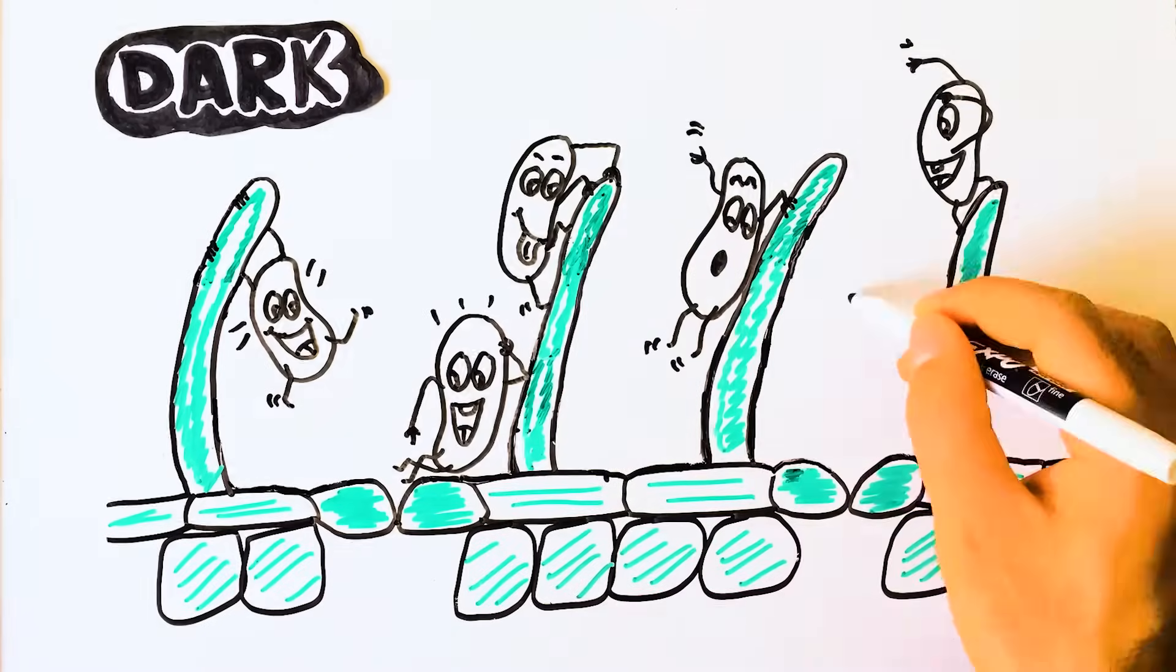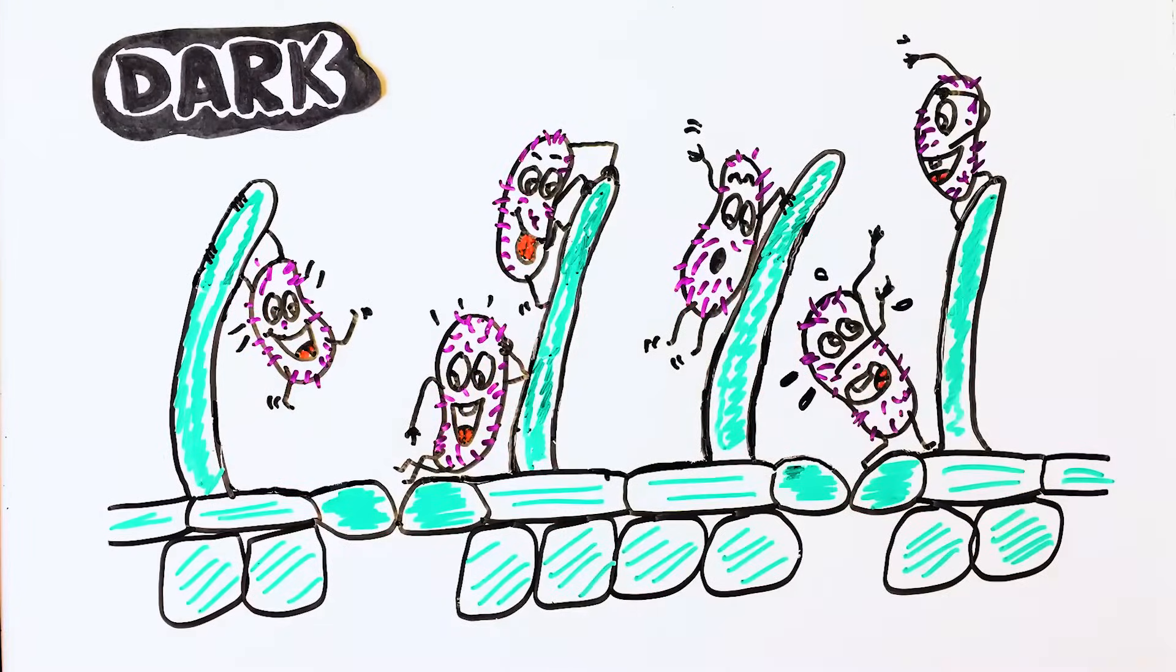In dark, the stomata mainly remain closed and you can imagine the bacteria playing around the leaf microstructures and consuming small chunks of nutrients.